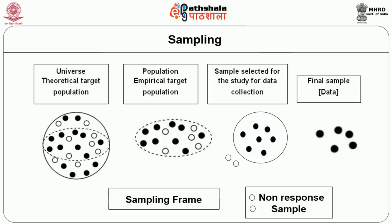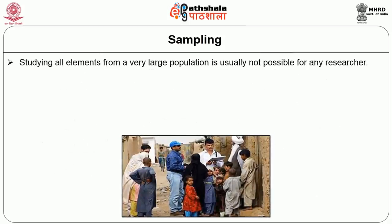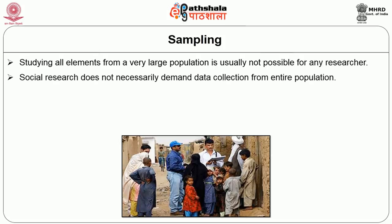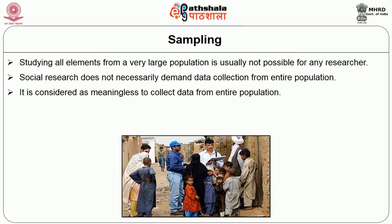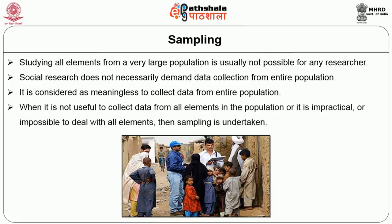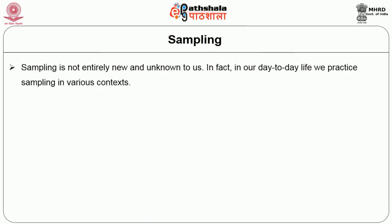A sample is a finite part of a population whose properties are studied to explain about the whole. The size of the sample need not be in proportion to the size of the population. Studying all elements from a large population is usually not possible. Social research does not necessarily demand data collection from the entire population — in fact, it is considered meaningless to do so. When it is impractical or impossible to deal with all elements, sampling is undertaken. Sampling is not entirely new; in our day-to-day life, we practice sampling in various contexts.